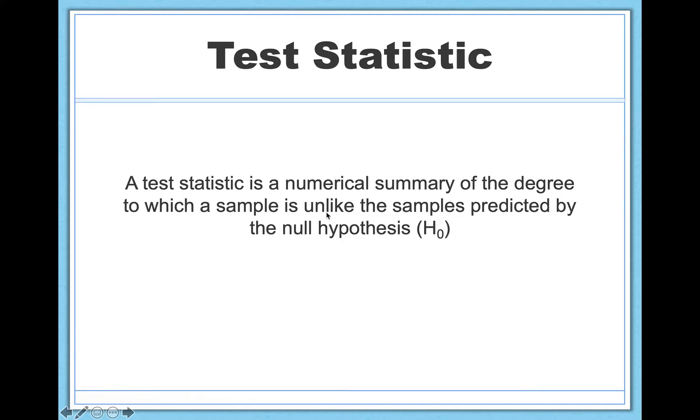So a test statistic says, okay, you got a result. How unlike these samples that are predicted by the null hypothesis is that result? Well, if you found an average IQ score of 150, that is very unlike the samples predicted by the null hypothesis. So your test statistic is sort of a measure of extremeness. It's a measure of your evidence, of how extreme your evidence is compared to the sort of assumption that there's no effect.